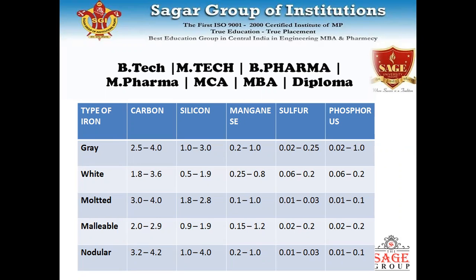White cast iron has carbon 1.8–3.6%, silicon 0.5–1.9%, magnesium 0.025–0.8%, sulfur 0.06–0.02%, and phosphorus 0.06–0.8%. Mottled cast iron has carbon 3–4%, silicon 1.8–2.8%, magnesium 0.1–1.0%, sulfur 0.012–0.03%, and phosphorus 0.01–0.1%.